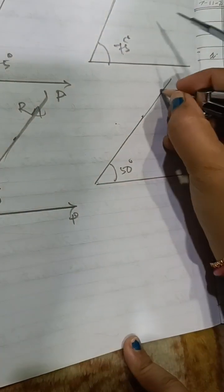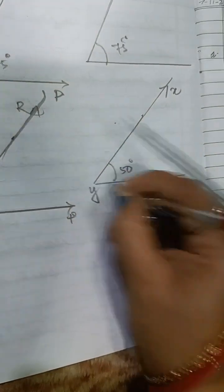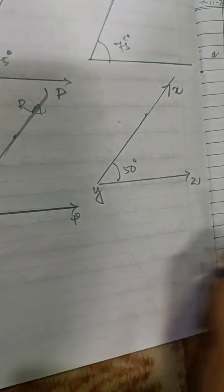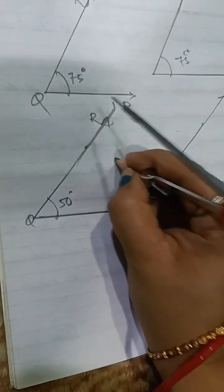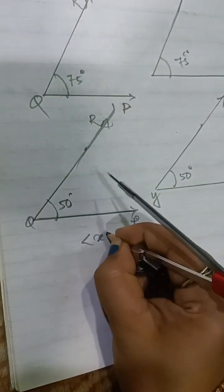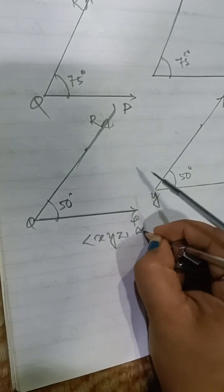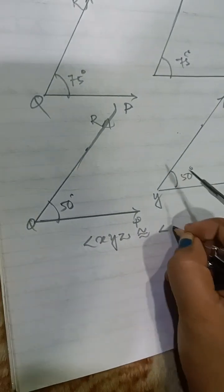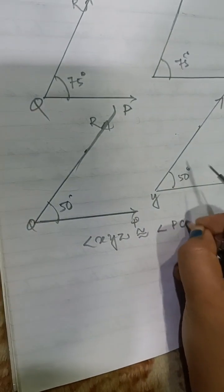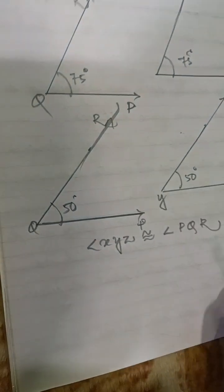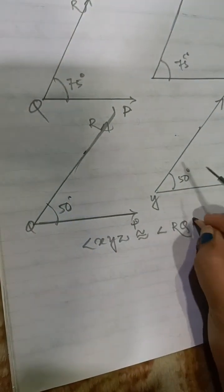Now suppose this is 50 degrees and suppose these points are X, Y, and Z. So angle XYZ is congruent to angle PQR, or RQP.